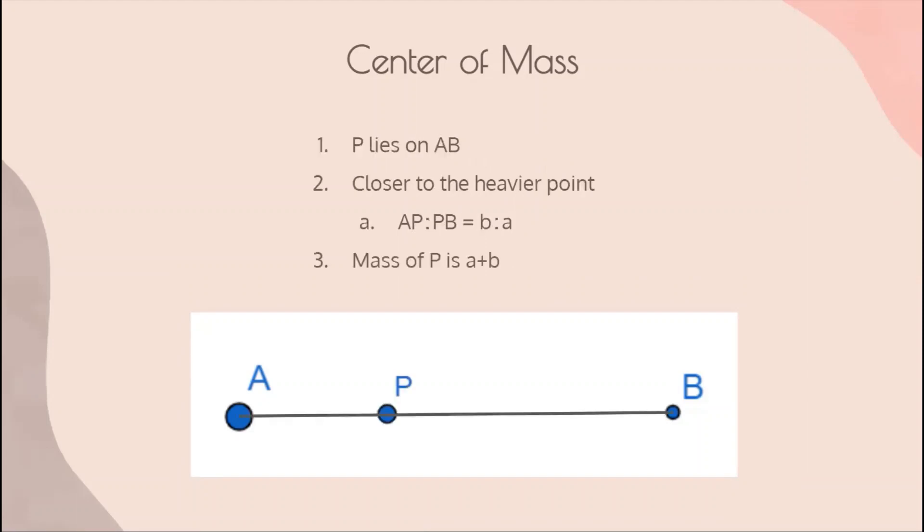Well, let's just notice some things here. Let's call the center of mass P. First of all, P has to lie on the line AB because it's between A and B. Second, P is going to be closer to the heavier point. How much closer? Well, in our example,